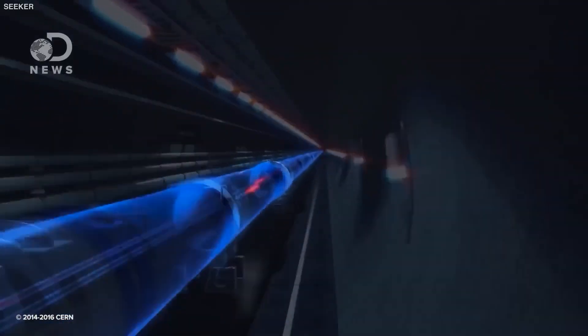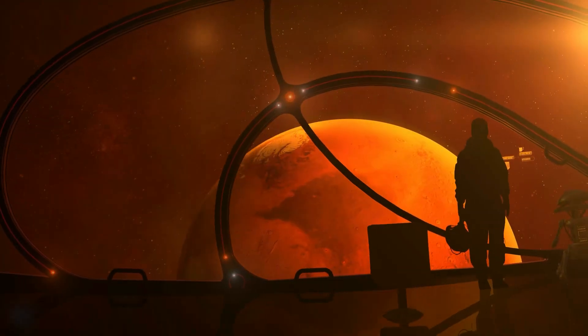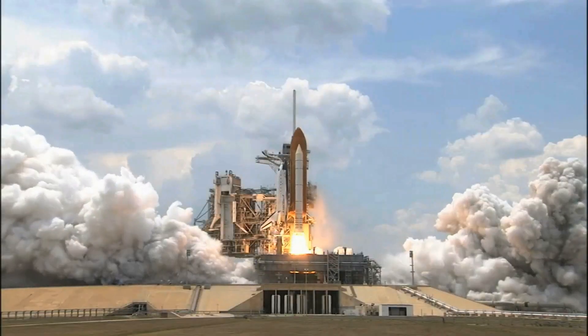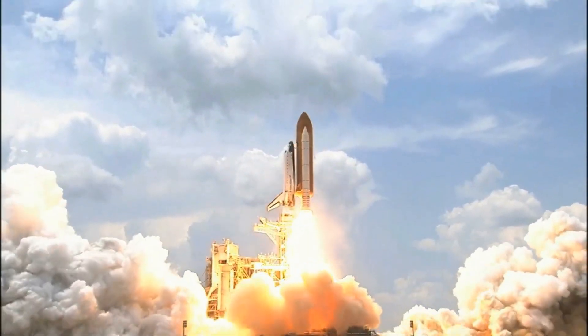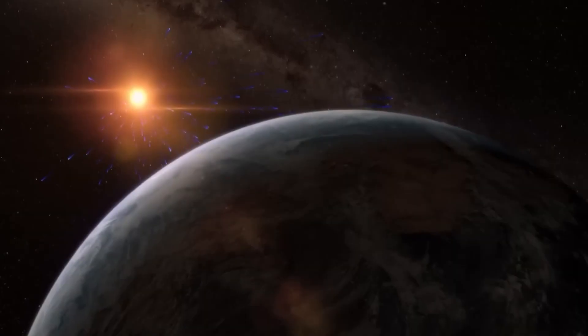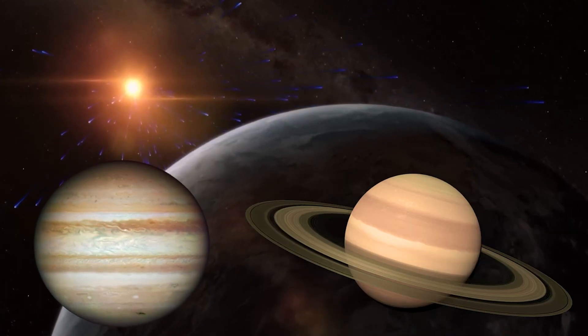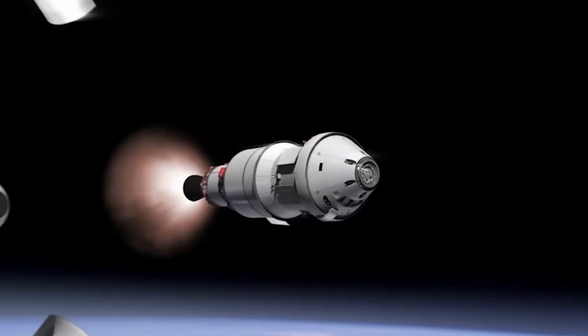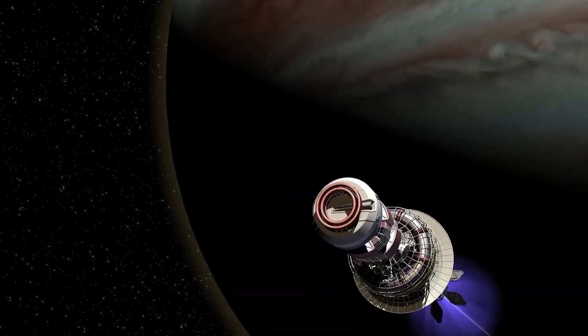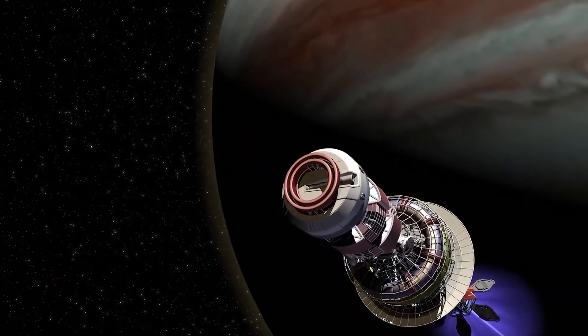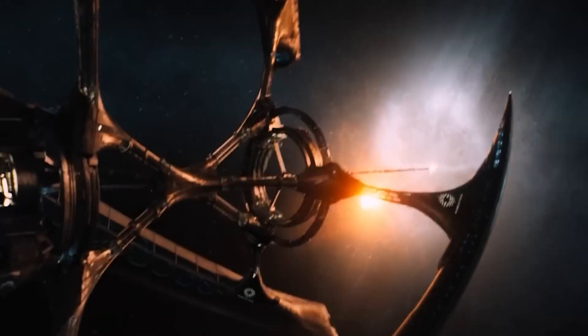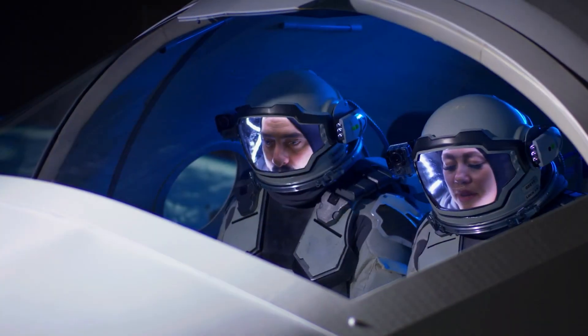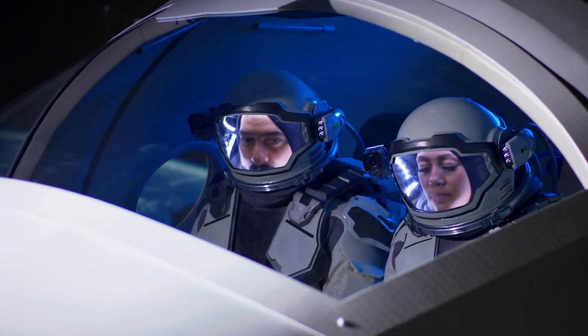If successfully harnessed, antimatter propulsion would enable spacecraft to reach Mars in just a few weeks compared to the six to eight months required by current chemical propulsion systems. Trips to the outer planets such as Jupiter or Saturn would be reduced from years to mere months. This dramatic reduction in travel time would not only accelerate our exploration of the cosmos, but also mitigate the risks associated with long-duration spacecraft, such as radiation exposure and the detrimental effects of microgravity on astronaut health.